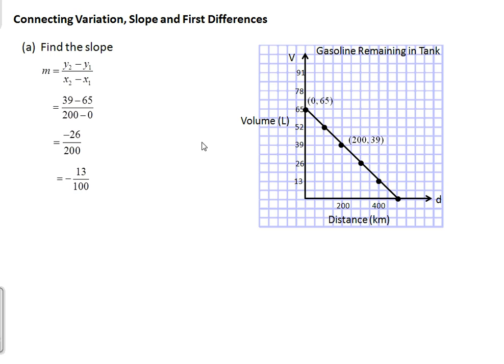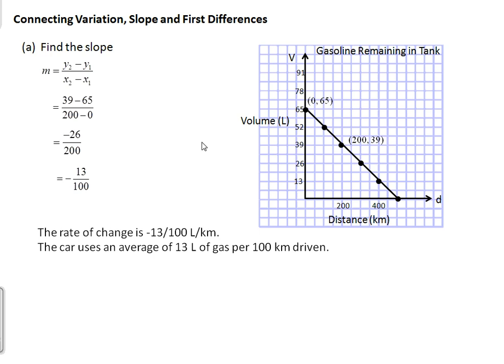So this is the rate of change of the volume of gas per distance driven. The rate of change is negative 13 over 100 litres per kilometre, meaning that on average the car uses about 13 litres of gas for every 100 kilometres driven. This gives us our slope, or m value, of negative 13 over 100.